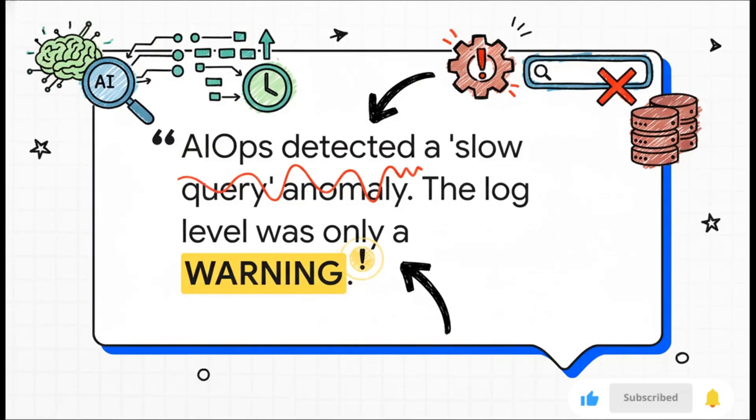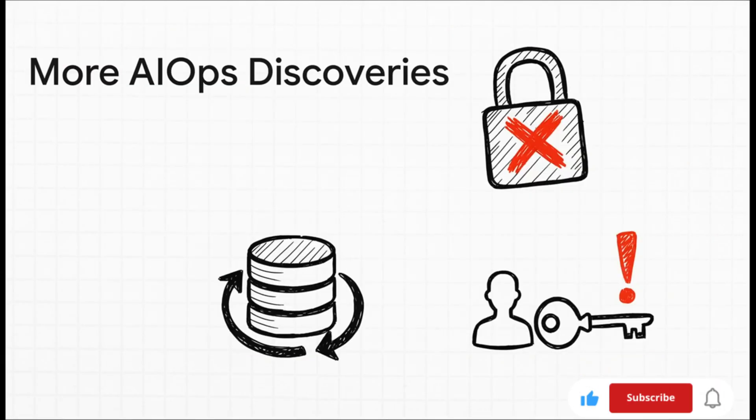The AIOps script, on the other hand, well, it found something that the old method was completely blind to, and honestly, this is the big aha moment. The AIOps script flagged a slow query anomaly. Now think about that: the traditional script just sailed right past it because the log level was only a warning, not an error. But if you've been in the trenches, you know that a slow query is often the canary in the coal mine. It's that tiny early warning sign of a massive database outage that's brewing just over the horizon.